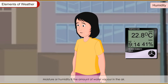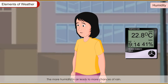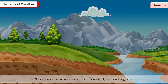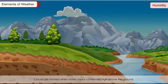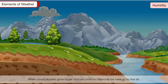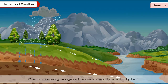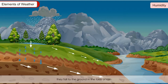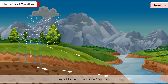Humidity or moisture is the amount of water vapor in the air. It is measured by a hygrometer. More humidity in the air leads to more chances of rain. Clouds are formed when water vapor condenses high above the ground. When cloud droplets grow larger and become too heavy to be held up by the air, they fall to the ground in the form of rain.